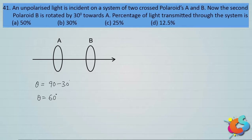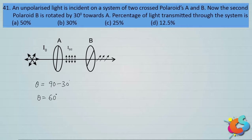Unpolarized light is incident on A. It gets polarized as soon as it passes through the polarizer and remains polarized after passing through B. We need to find the percentage of transmission. If the initial intensity is I₀, it becomes I₀/2 irrespective of the orientation of A. The emergent intensity I, using Malus's law, is I = (I₀/2) · cos²θ.